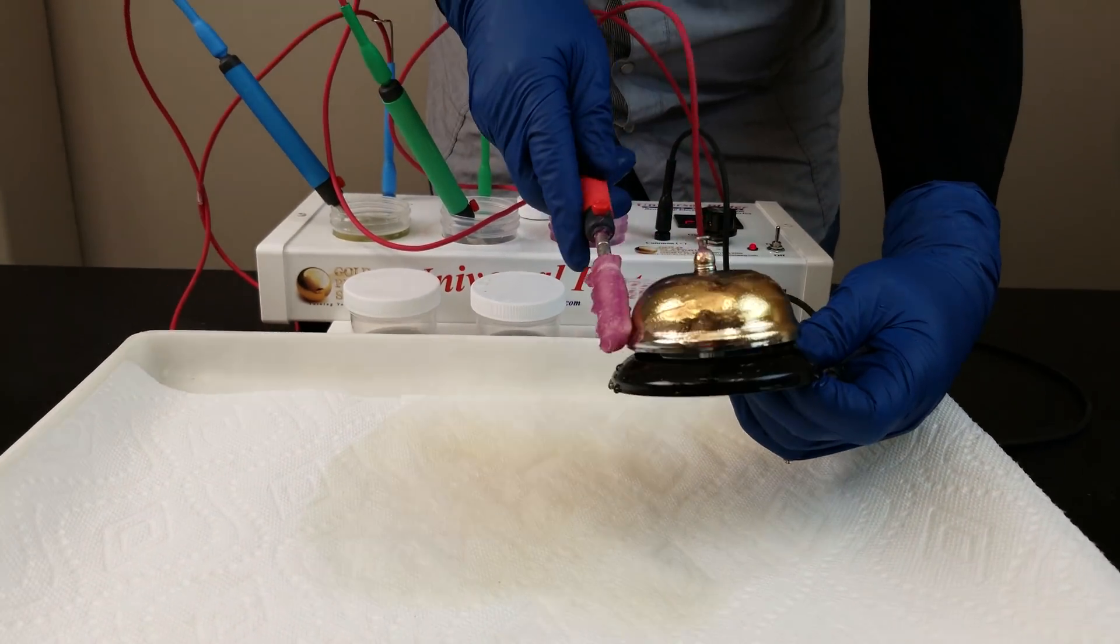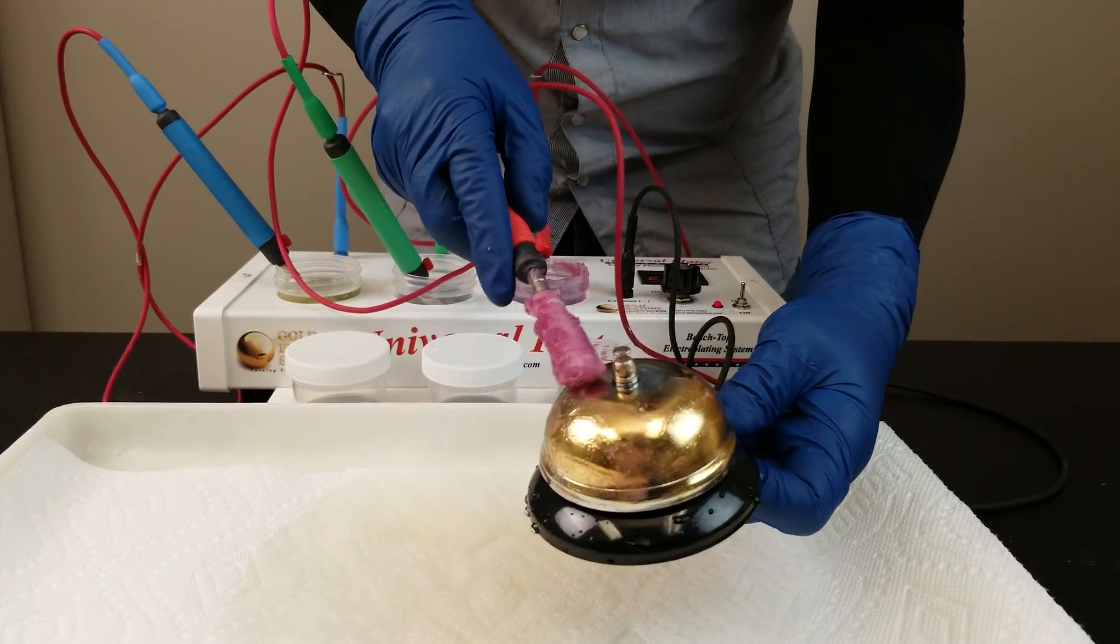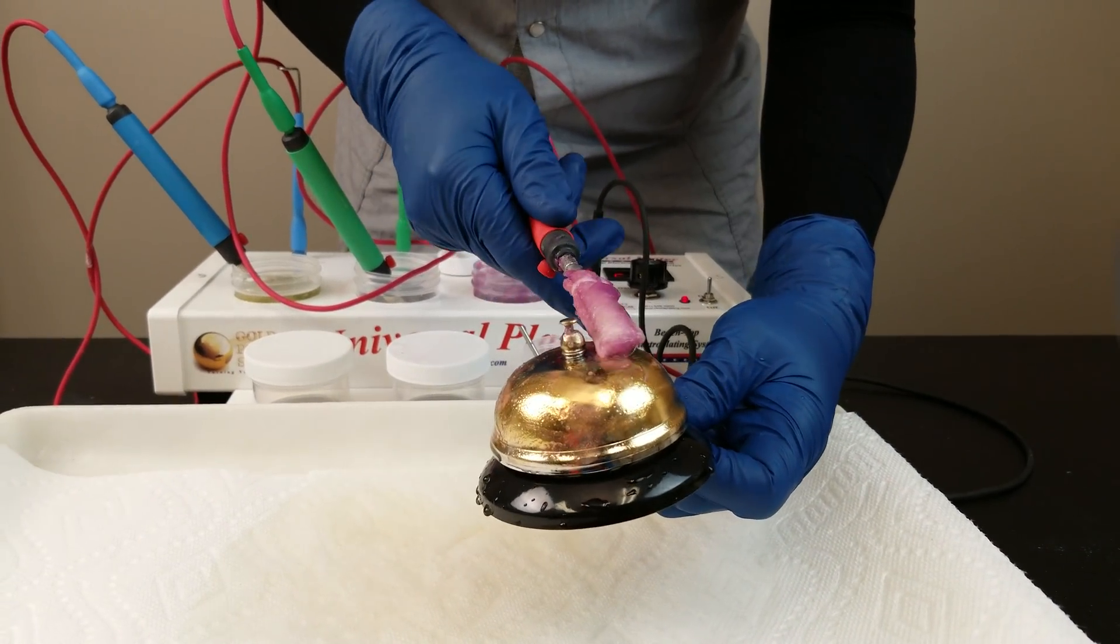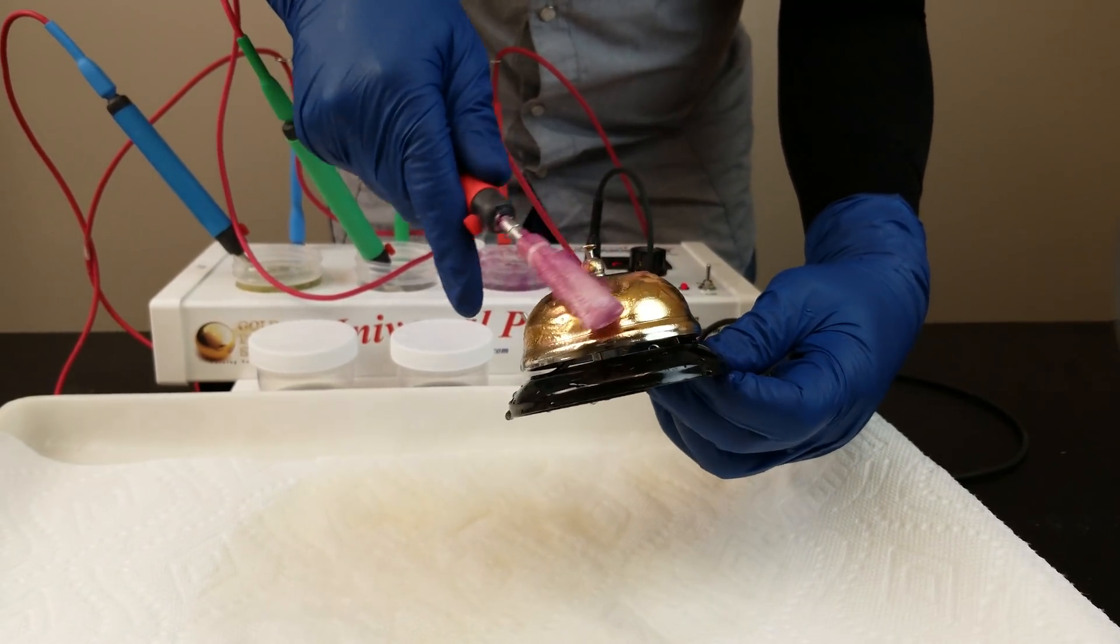...but this is definitely a darker, deeper, rich yellow gold color that this will apply. And since we're going to be rose gold plating it, I'm just going to put a thin layer on here.